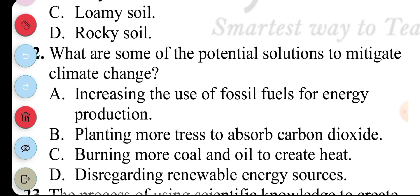Question 22. What are some of the potential solutions to mitigate climate change? A. Increasing the use of fossil fuel for energy production, B. Planting more trees to absorb carbon dioxide, C. Burning more coal and oil to create heat, D. Disregarding renewable energy sources. The answer to question 22 is B. Planting more trees.